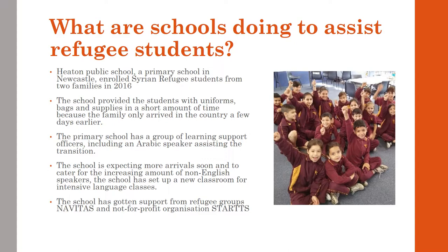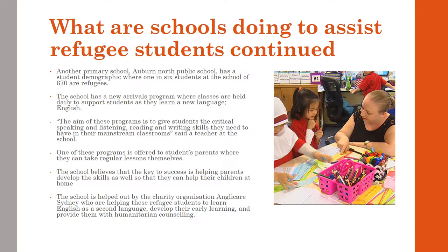Auburn North Public School is a primary school where one in six students are refugees. The school has a new arrivals program where classes are held daily to support students as they learn English for the first time. A teacher at the school has said that the aim of these programs is to give students the critical speaking, listening, reading and writing skills they need in their mainstream classrooms, so that they can be at level with mainstream students. Another program the school offers is for parents of students, where they can take regular lessons themselves so that they can help their children at home. The school believes the key to success is helping parents develop these skills as well.